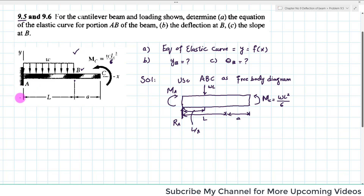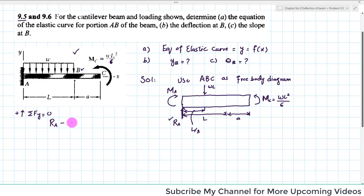We will apply the equation of equilibrium: the sum of all forces along the Y direction must be equal to zero, with upward force positive. You can see there are two forces acting — RA (upward) and W×L (downward) — so RA will be equal to W×L. We have found the reaction force at A.